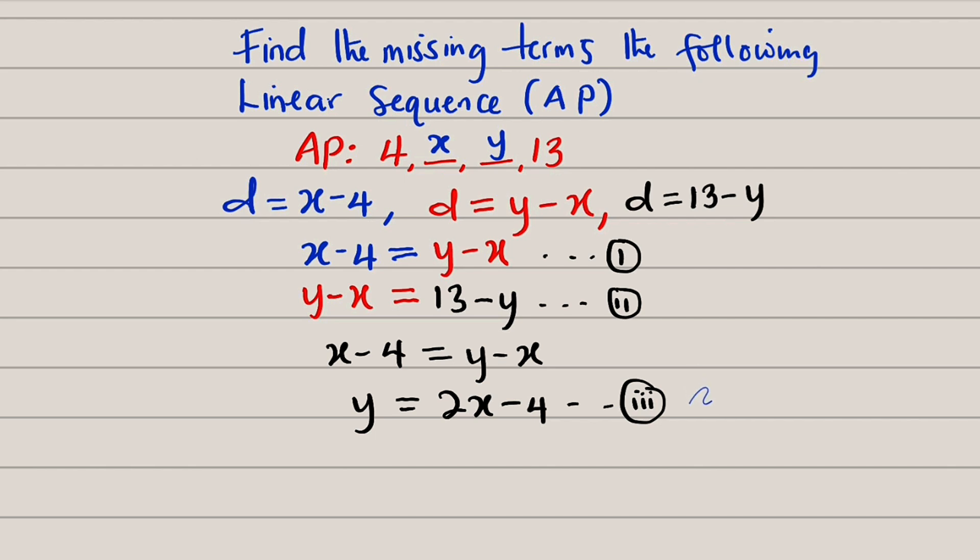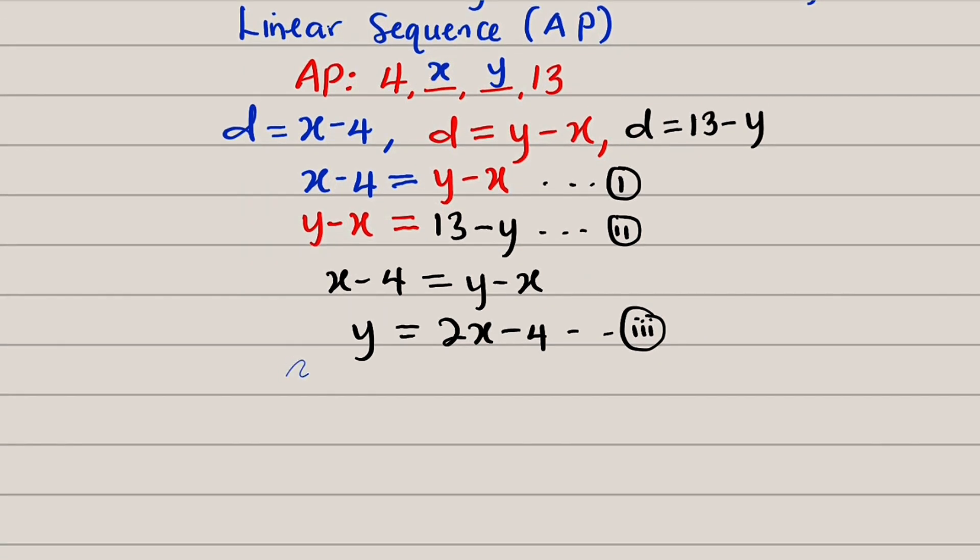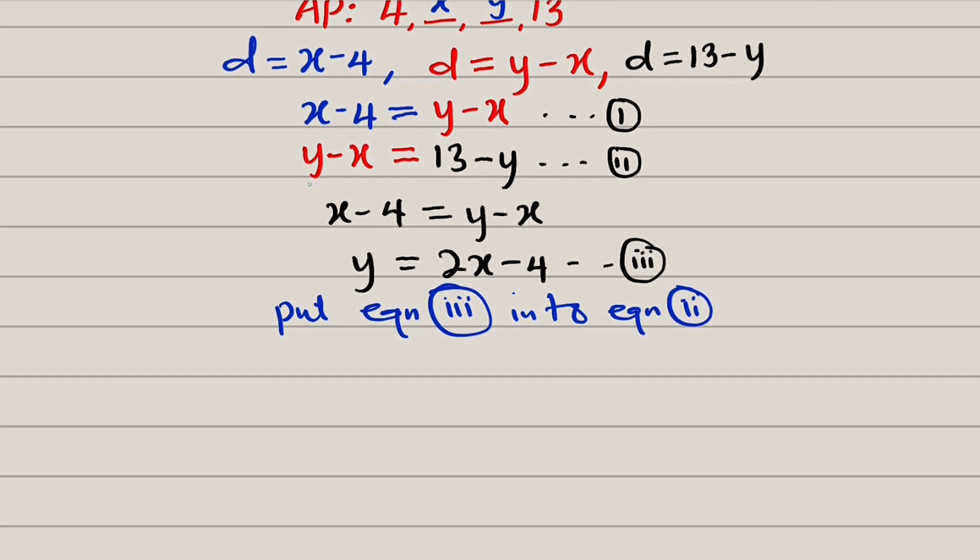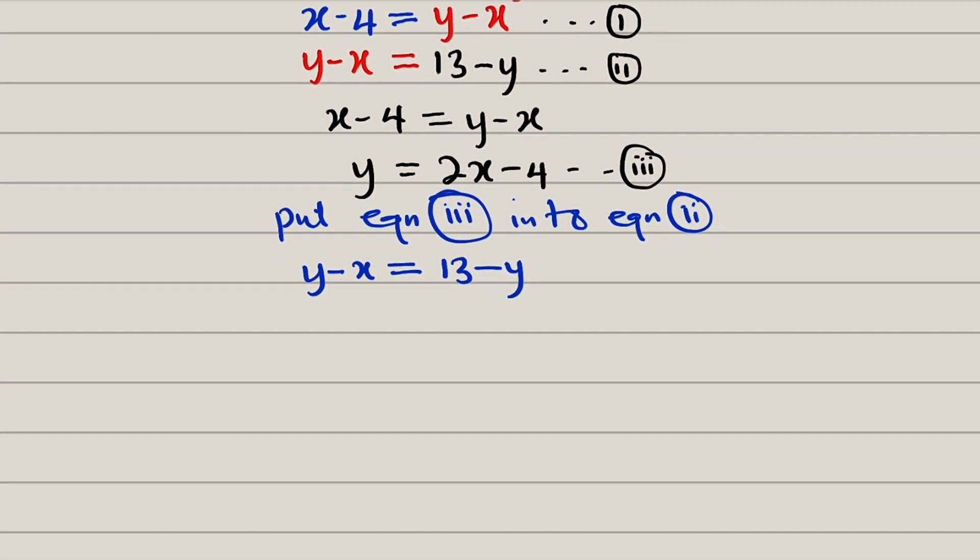Okay, now we are free to substitute equation 3 into equation 2. Wherever we see y, we are going to replace it with 2x minus 4 in that equation. So we have, let me write it here. We have y minus x equals 13 minus y. But y is equal to 2x minus 4. 2x minus 4 then minus x from the left-hand side. To the right-hand side, we have 13 minus, because it is subtraction, we need to add a bracket, 2x minus 4.